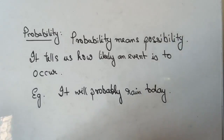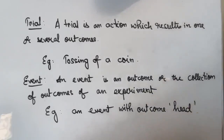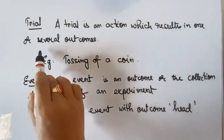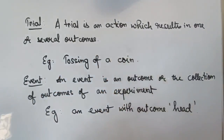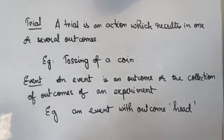Next we are going to study some of the terms relating to this chapter and their definitions. The first term is 'trial'. A trial is an action which results in one or several outcomes. For example, tossing a coin results in the outcome of getting a head or a tail — the action of tossing that coin is called a trial.